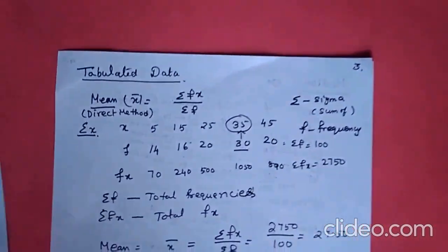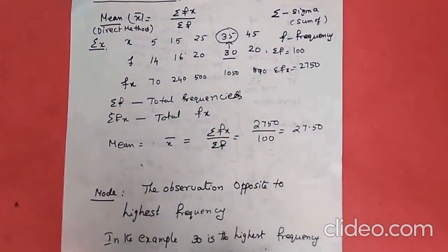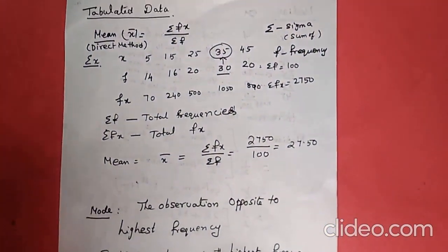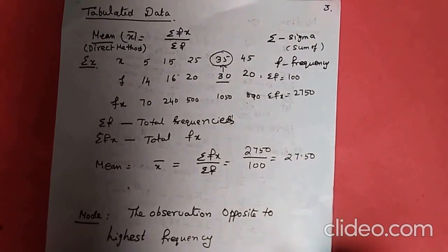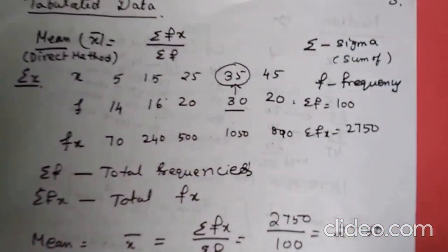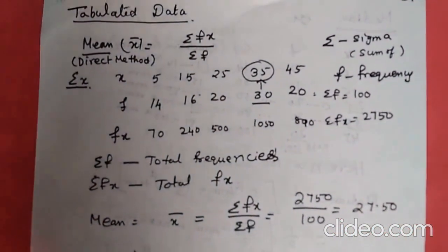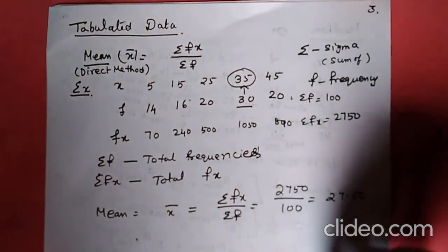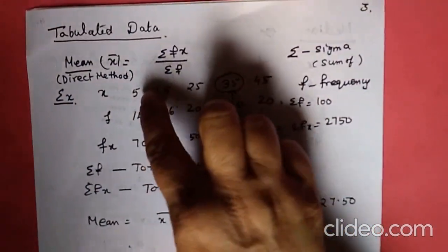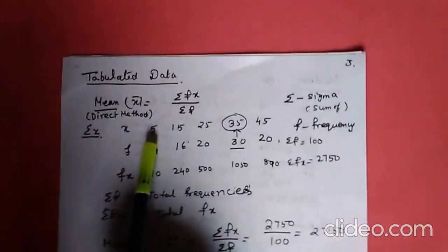Now you have understood, for raw data, what is mean, what is median, and what is mode. Now let's move to tabulated data. In tabulated form, numbers and frequencies are given and you have to find the values.